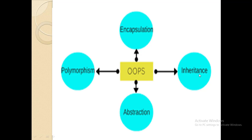Another most important concept of OOP is inheritance. The capability of a class to derive properties and characteristics from another class is called inheritance. It allows users to create a new class — known as a derived class — from an existing class known as a base class. The derived class inherits all the features from the base class and can have additional features of its own.